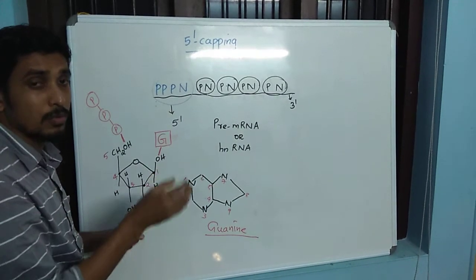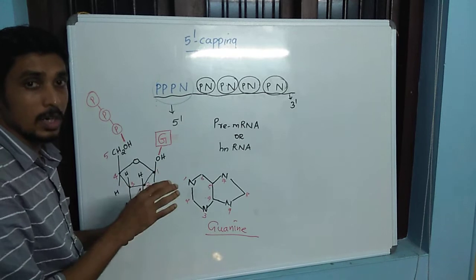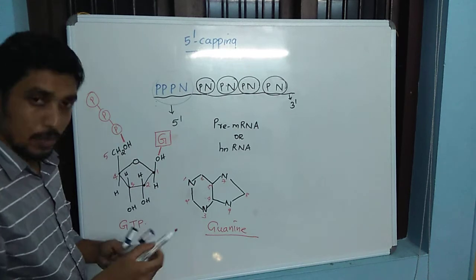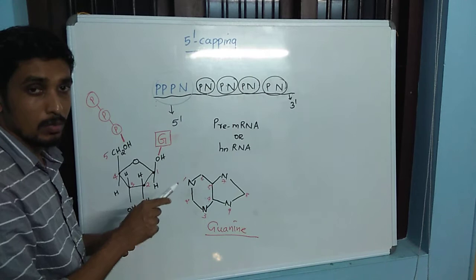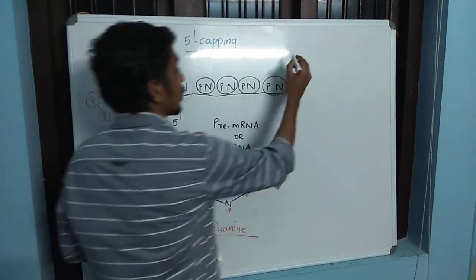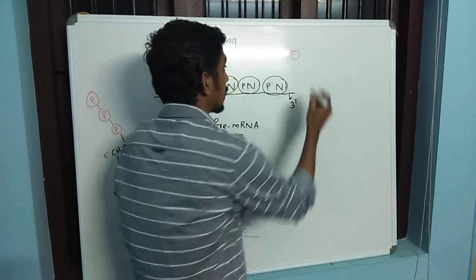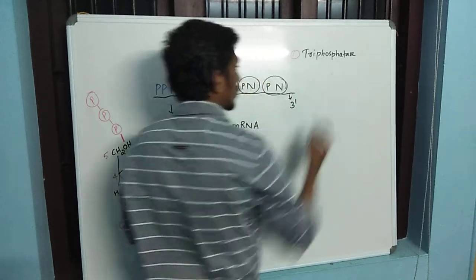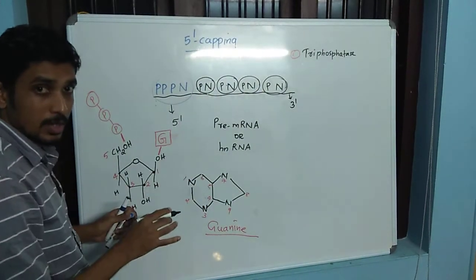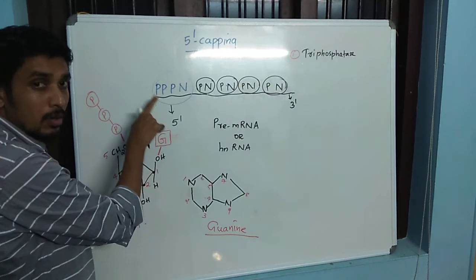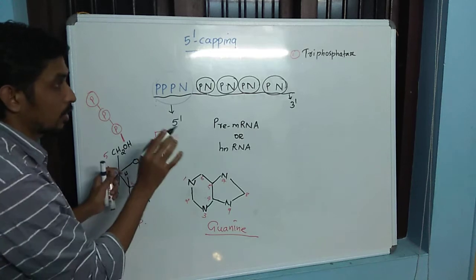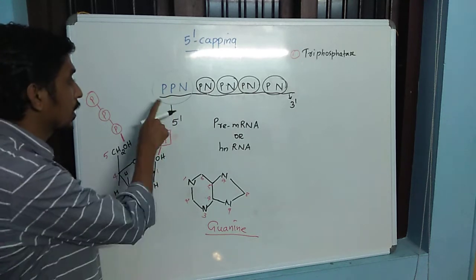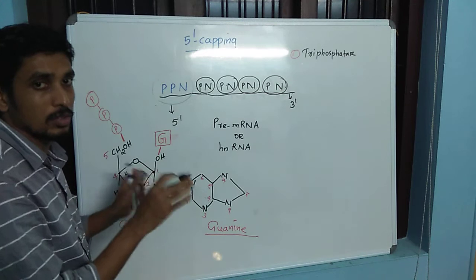Five prime capping involves the participation of different kinds of enzymes. The first type of enzyme helping for five prime capping is triphosphatase. This triphosphatase enzyme cleaves or removes one phosphate group from the nucleotide triphosphate, leaving a diphosphate. That is the function of triphosphatase.